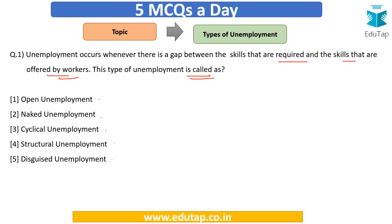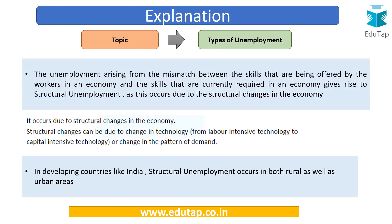Structural unemployment basically means that unemployment has occurred due to structural changes in the economy. For example, our economy was primarily dependent on agriculture, then it shifted to manufacturing and then the service sector. This transformation is known as structural change. Structural changes can also include technological advancements. When such changes take place, structural unemployment occurs — it arises from a mismatch between skills offered by workers and skills currently required in the economy.